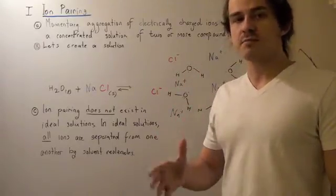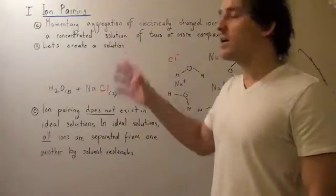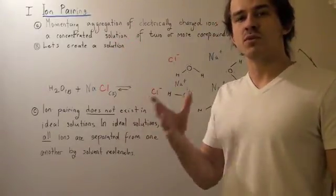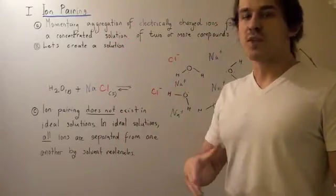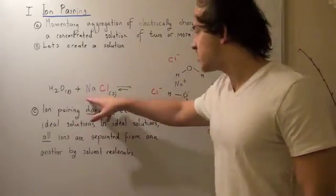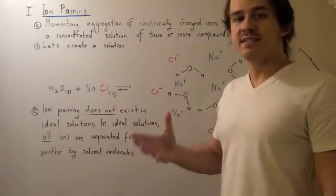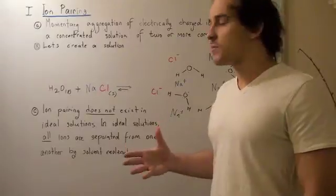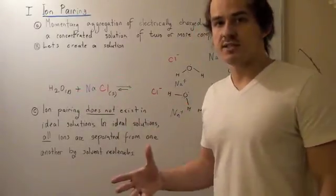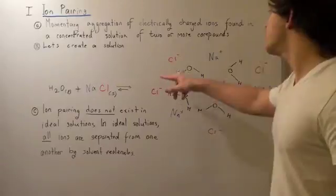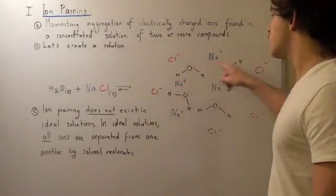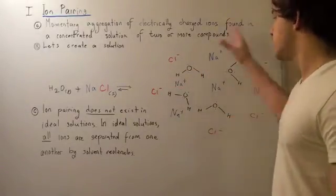To really grasp what we mean by ion pairing, let's create a solution and see what happens. Let's mix liquid water and solid sodium chloride. Once we mix them, the sodium chloride dissociates and forms ions, so we have a bunch of polar water molecules separated by ions.